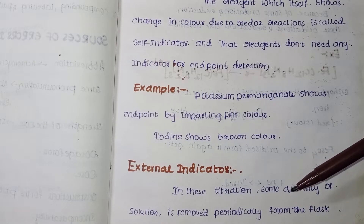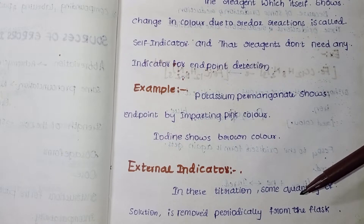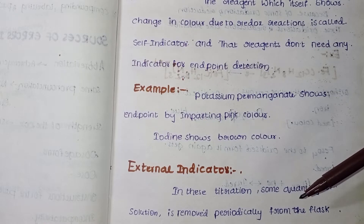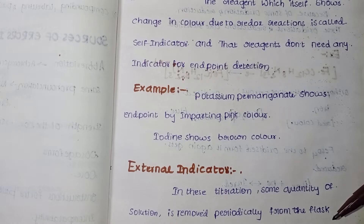Iodine can be used to detect the end point. The external indicator — in this titration, some quantity of solution is removed periodically and tested with the indicator to detect the end point.